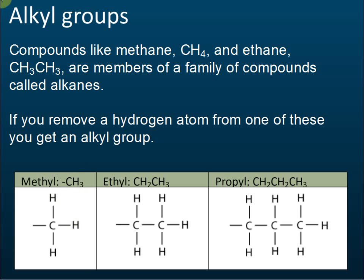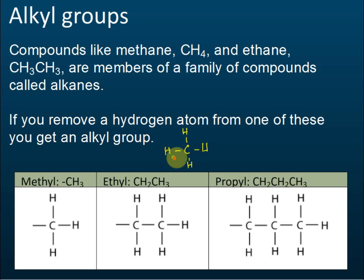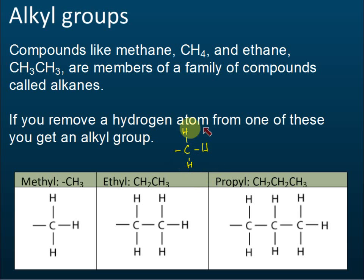Take methane as an example — this is methane with its structural formula. If we remove one hydrogen from methane, it becomes an alkyl group. Before removal it was an alkane called methane; after removing one hydrogen, the new name for this group of atoms is called methyl. That is an alkyl group — remove one hydrogen from the alkane molecule and it becomes alkyl.